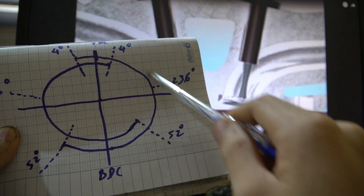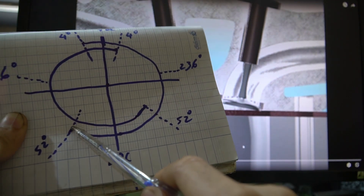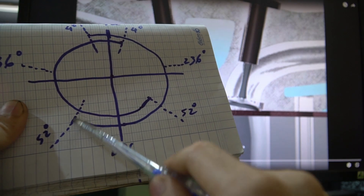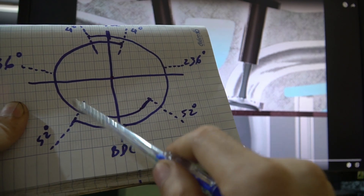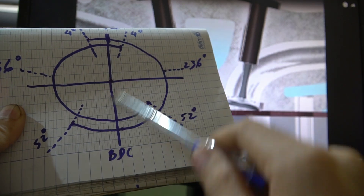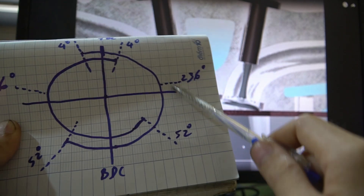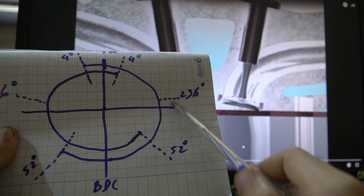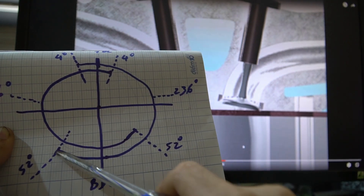Khi piston quay xuống tới điểm chết dưới và đi qua điểm chết dưới, piston bắt đầu đi lên rồi - tới khoảng 52 độ sau điểm chết dưới thì cái xúc bắp nó mới đóng hoàn toàn và tới chu kỳ nén. Cái này gọi là mở sớm và đóng trễ. Cái chu kỳ quay của cái trục cam sẽ lớn hơn - hồi nãy là 212 độ, cái này nó tới 236 độ - là cái hành trình của cái trục cam mình mở nó dài hơn.